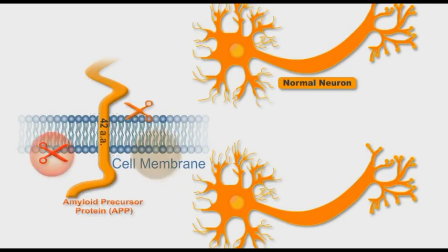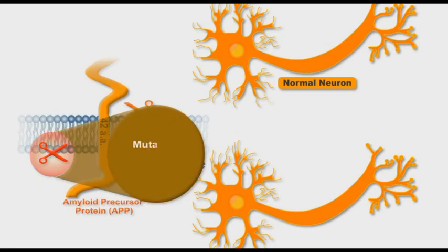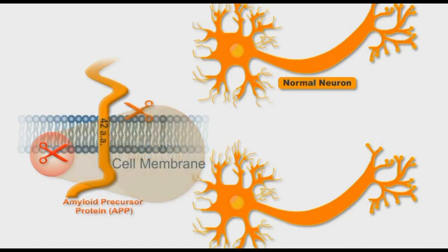However, sometimes and for unknown reasons, a mutation occurs in the gamma secretase enzyme. This mutation results in the production of 42 amino acid peptide fragments.